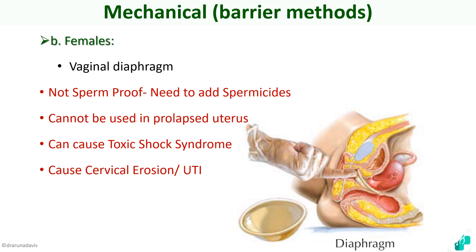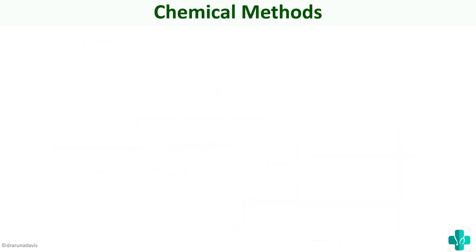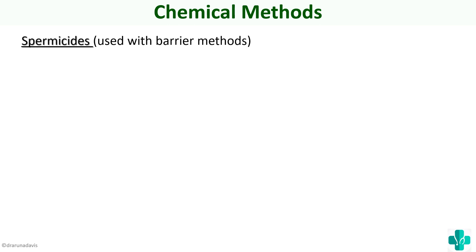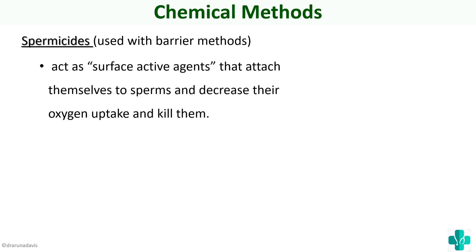Because both vaginal diaphragms and female condoms have disadvantages and a high failure rate, mechanical methods need to be coupled with chemical methods. Chemical methods basically means spermicides. They act as surface-active agents that attach to sperm, decrease oxygen uptake, and kill them.